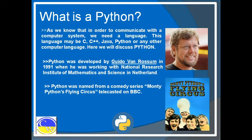You might have heard of various types of languages. Like Java, C, C++ — similarly Python is also a sort of language. Python was developed by Guido Van Rossum in 1991, when he was working with the National Research Institute of Mathematics and Science in the Netherlands.